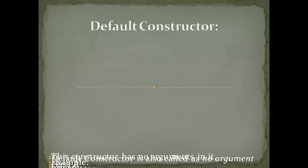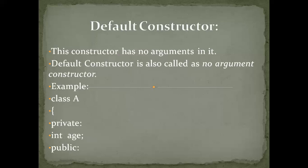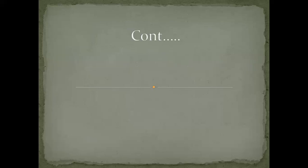Default constructor: This constructor has no argument. The default constructor is also called a no-argument constructor. For example, if the class is A, its constructor is also A.